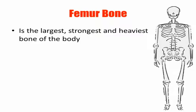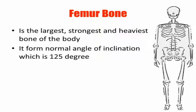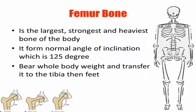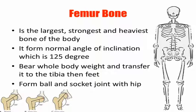Now we will learn about the femur bone. The femur is the largest, strongest, and heaviest bone of the body. It forms a normal angle of inclination of about 125 degrees, with some variation between males and females. The femur bears the whole body weight and transfers it to the tibia and then to the feet. It forms a ball and socket joint.